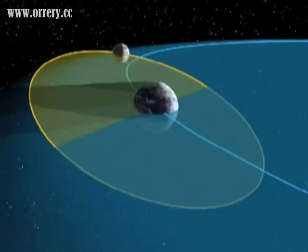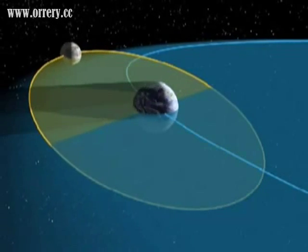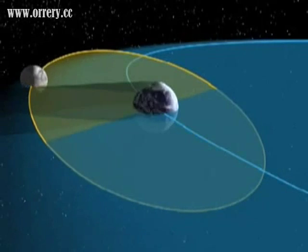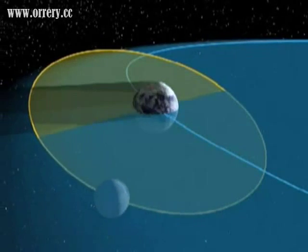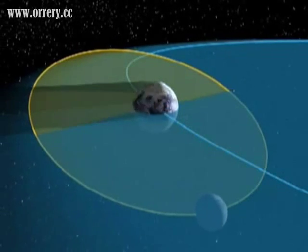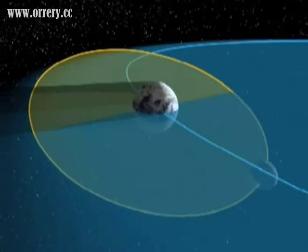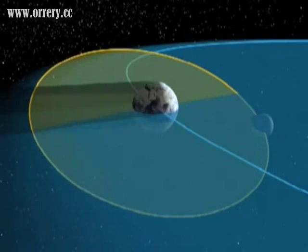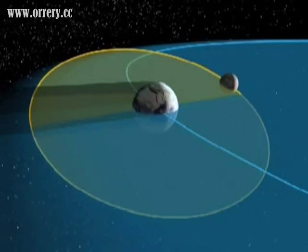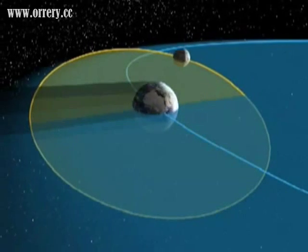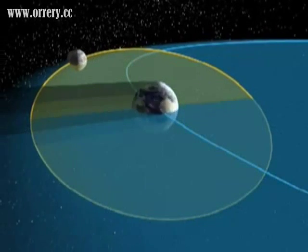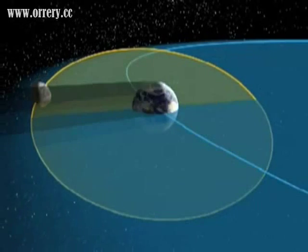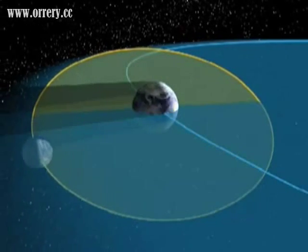At other times, the Earth's shadow will pass to one side or the other of the moon and there will be no eclipse at all. This special alignment is only possible during the so-called eclipse seasons, which happen about every six months.